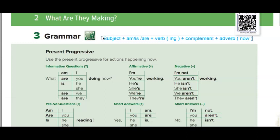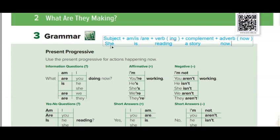Let me give you an example. For instance: 'She' — the appropriate be verb for 'she' is 'is.' The main verb is 'read' — we add ing to it. So: 'She is reading a story now.' — هي تقرأ قصة الآن. This is a simple example of a present progressive sentence.